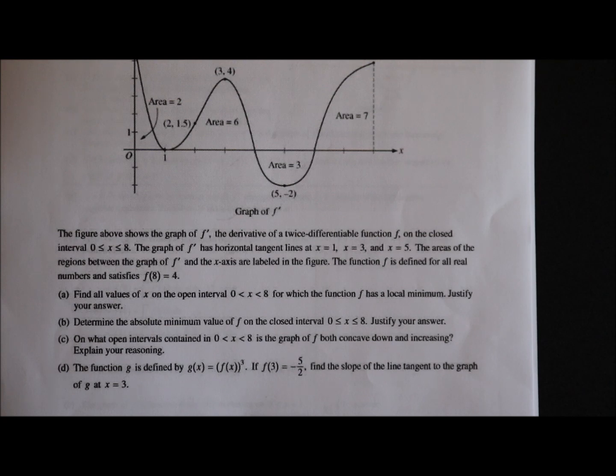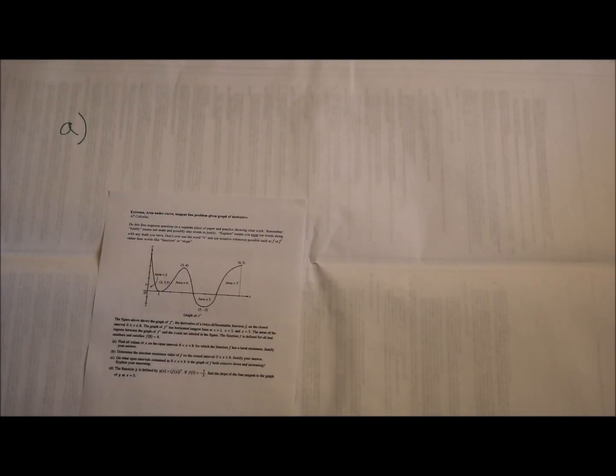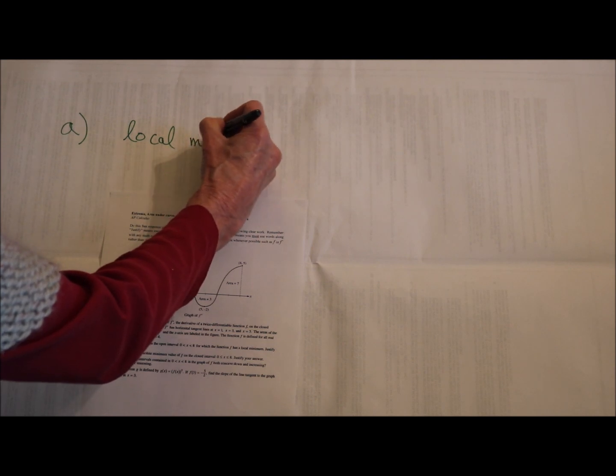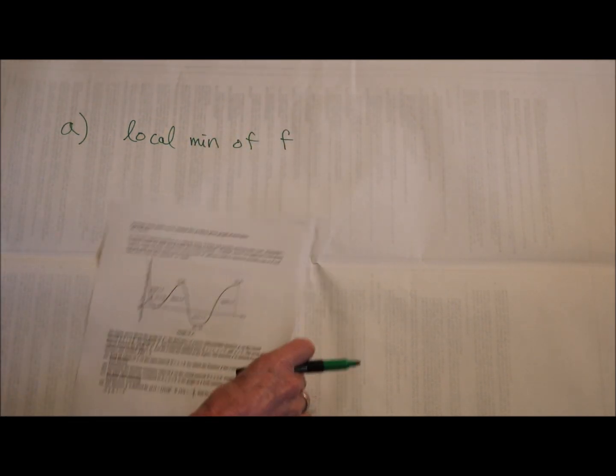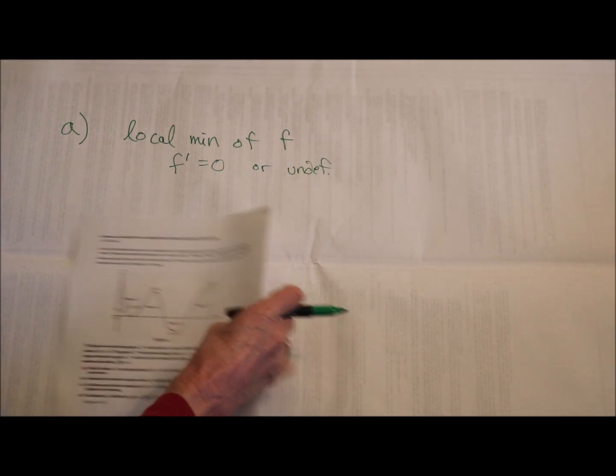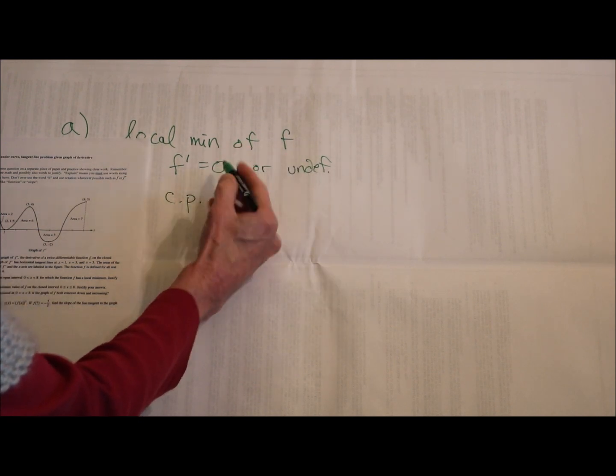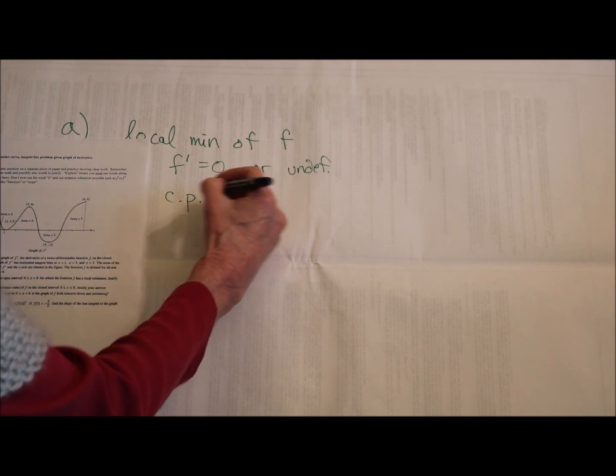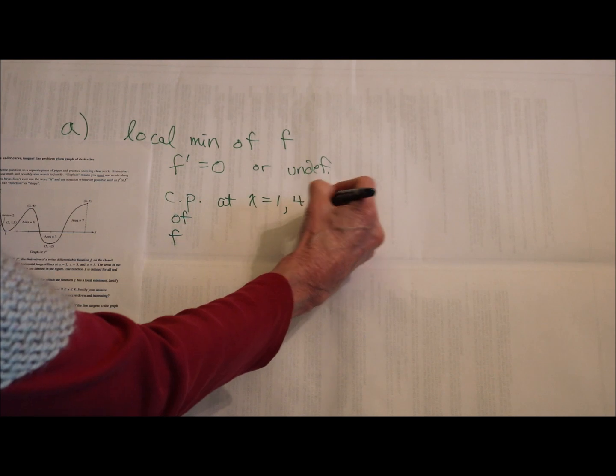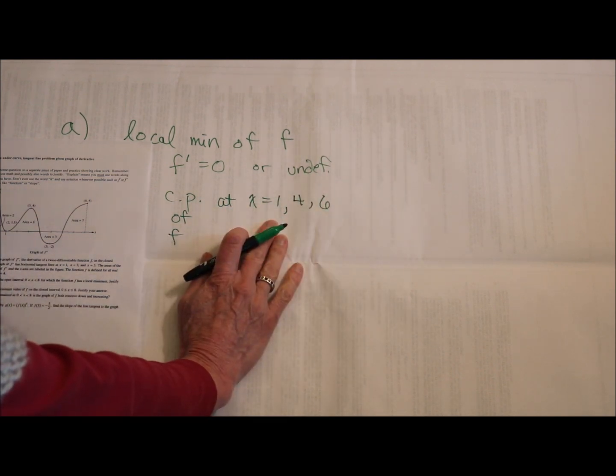Part A: Find all values of x on the open interval from 0 to 8 for which the function f has a local minimum. Justify your answer. For part A, we're looking for a local minimum of f. Now, whenever you're looking at a graph, you really have to note what you're looking at. They give you a graph of the derivative of f. So if I'm looking for a local minimum of f, I want to see when the derivative equals 0 or the derivative is undefined. So if you look at your graph, these are all critical points where the derivative is 0 or undefined. I have critical points of f at x equals 1, 4, and x equals 6. Those are my candidates for a local minimum.